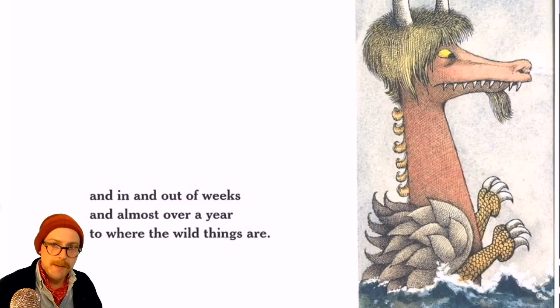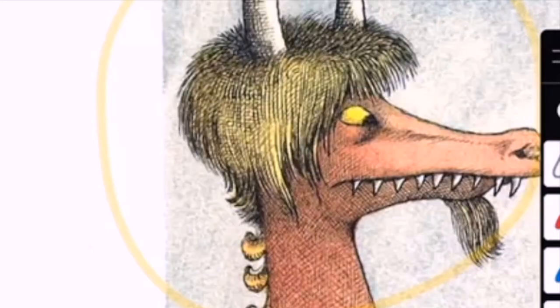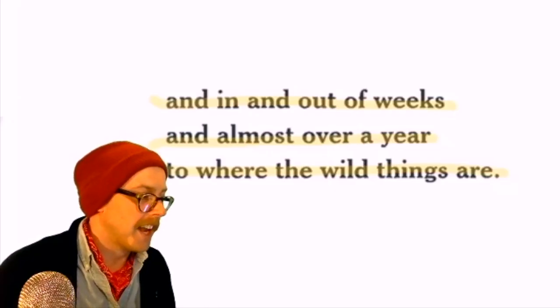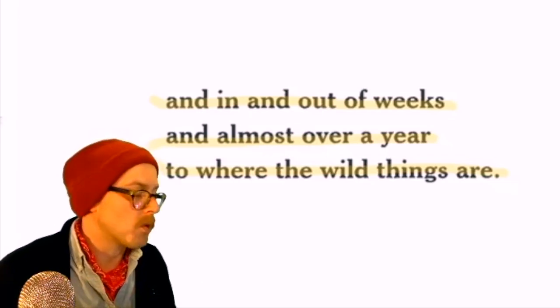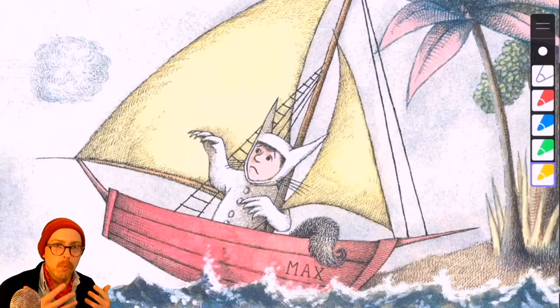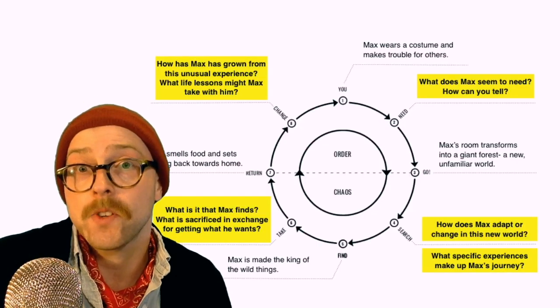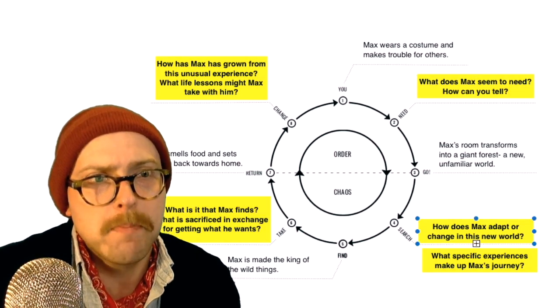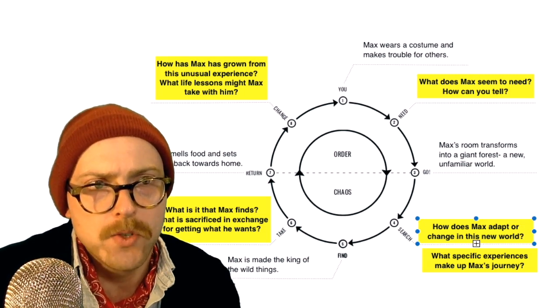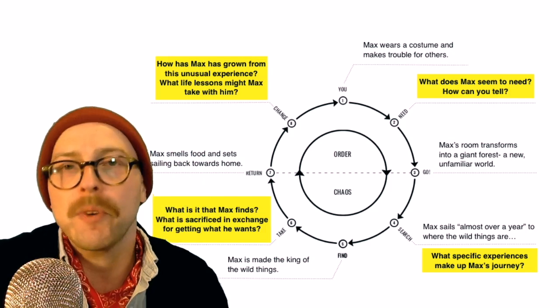He's got a dragon chasing him on the next page. This is where the wild things are — here's our first proof, a wild thing right there — highlighting how bizarre and different this world is for Max. How does he feel when he first arrives at the island where the wild things are? This is the beginning of Max's search. How does Max adapt or change in this new world? He didn't have to go on the boat, but he makes a choice to go into this new world.